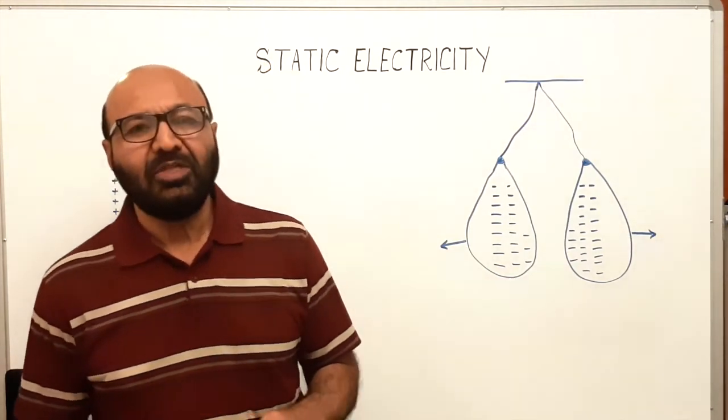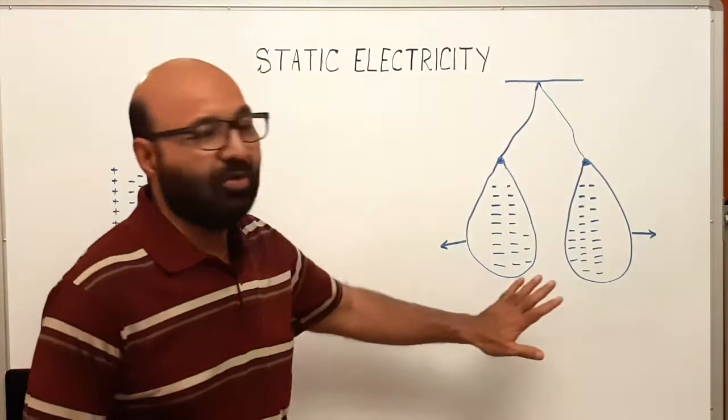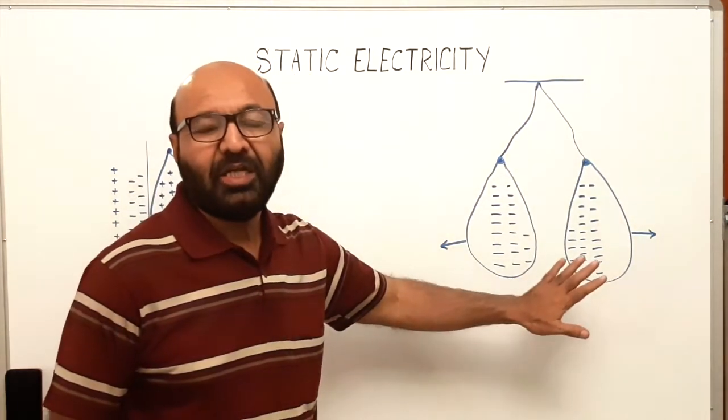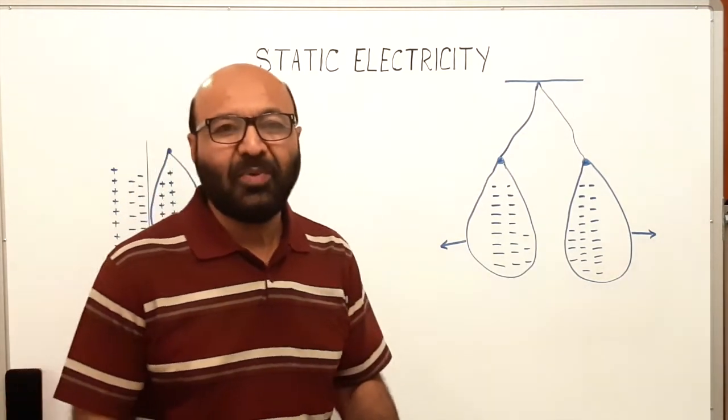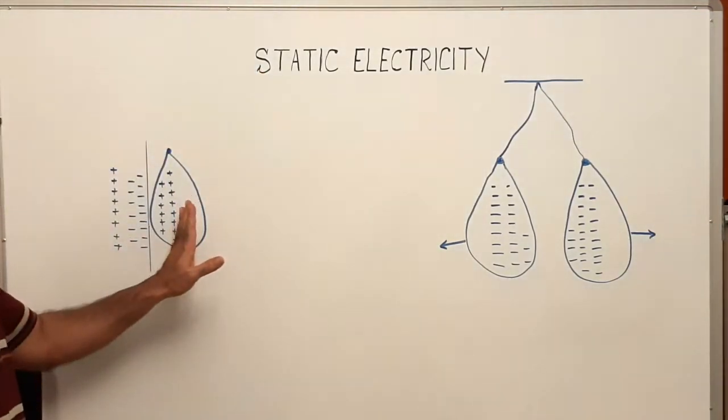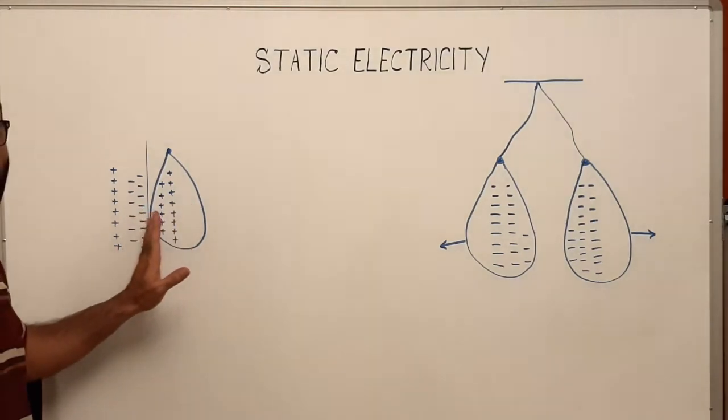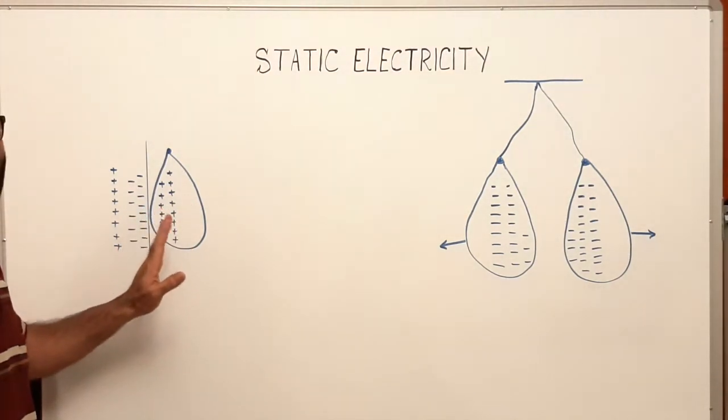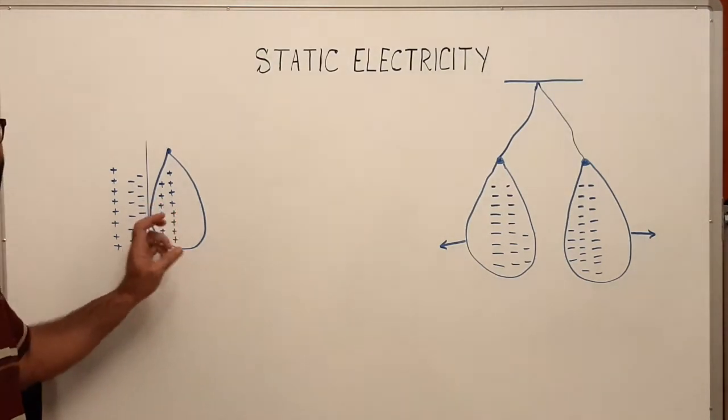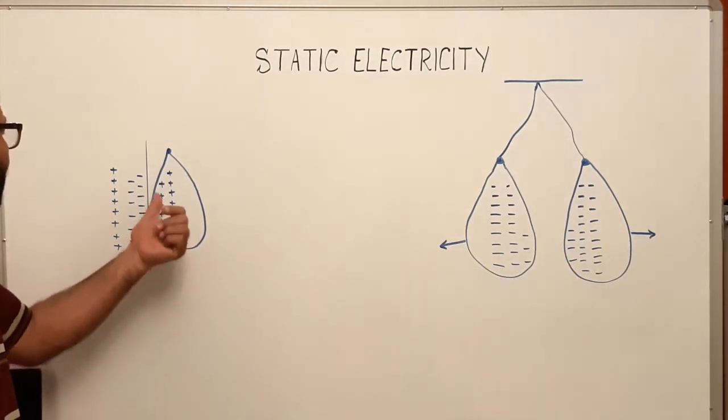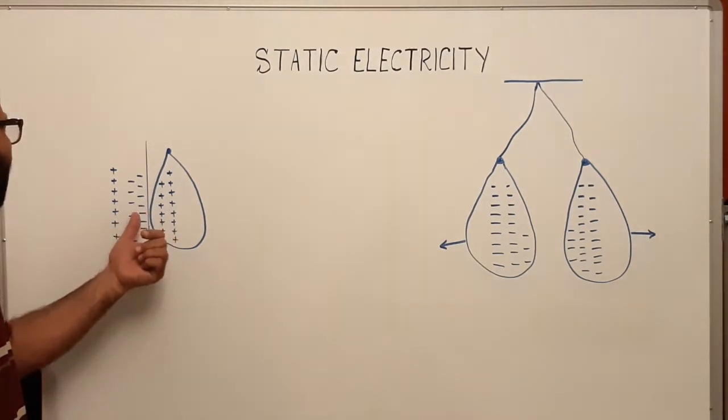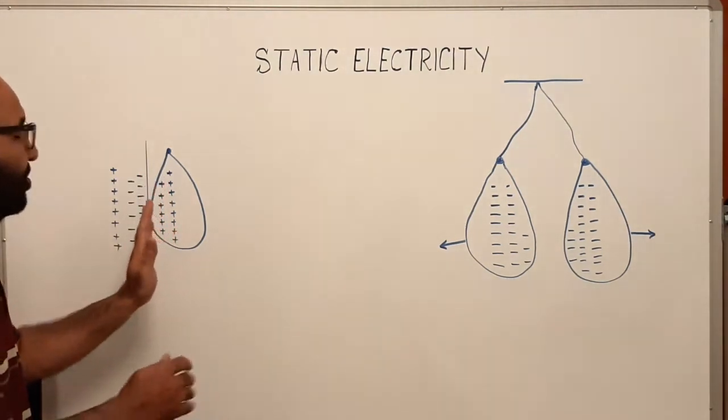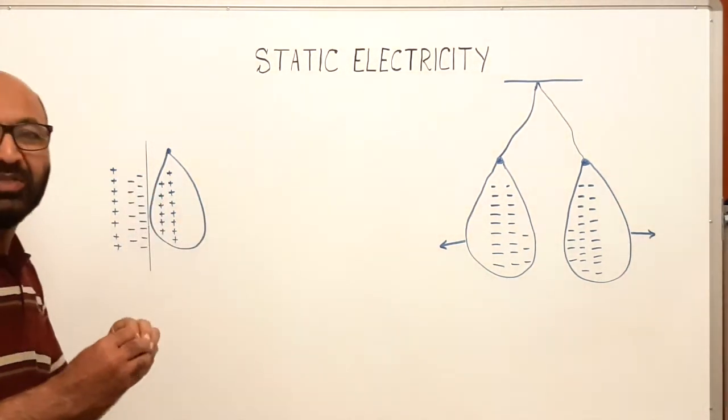Likewise, when we rub a cloth on a balloon, it develops certain charge. And when we bring this charged balloon near the wall, the wall starts inducing charges. The positive charge goes away and the negative charge comes close to the balloon, and it sticks on the wall.